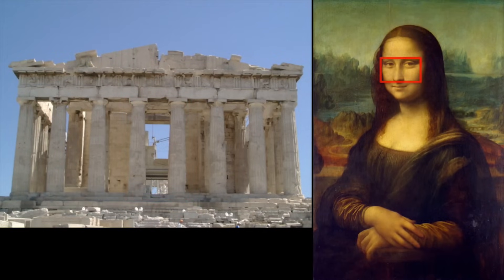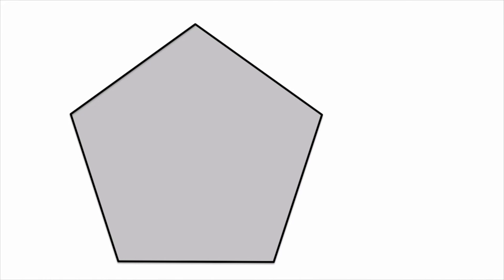The Greeks' interest in this quantity probably started when they considered the regular pentagon. If the side length is one, then the length of a diagonal is the golden ratio.